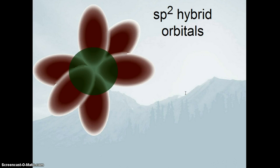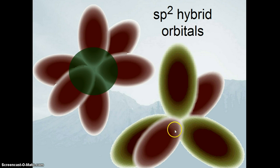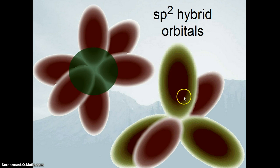Here's a visual. There are the p orbitals and the s orbital. When we combine them, we get three hybrid orbitals — there's one, another, and another. Then there's one unhybridized p orbital 90 degrees off of the plane of the hybrid orbitals. So this is our unmodified atomic p orbital, and then three hybrid orbitals in the trigonal plane.